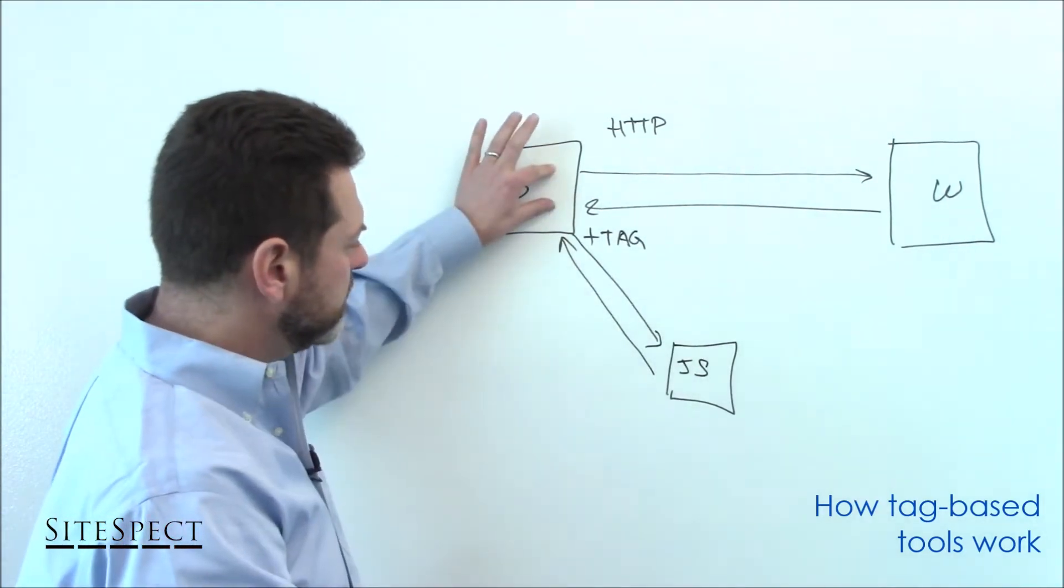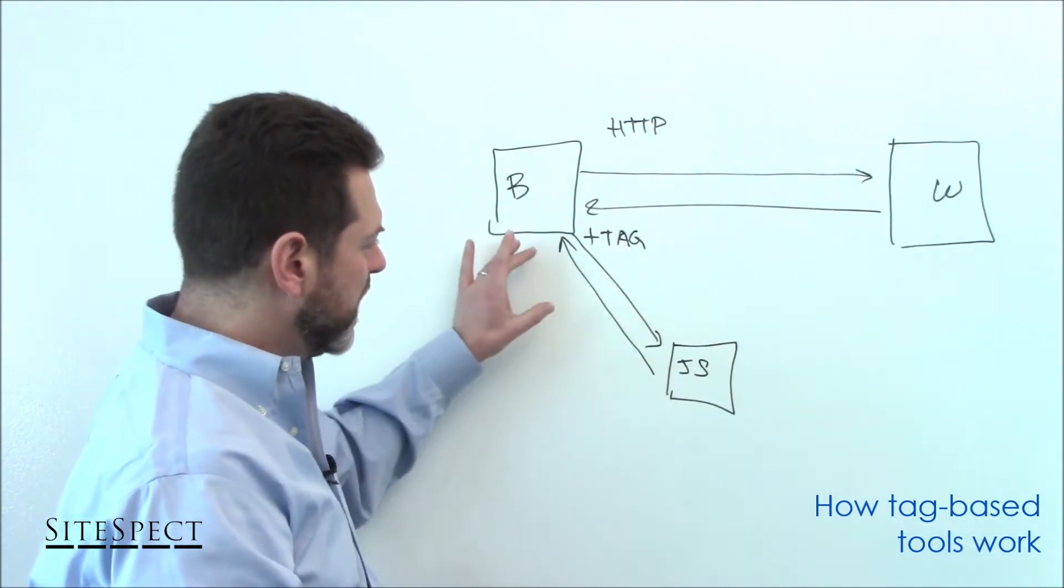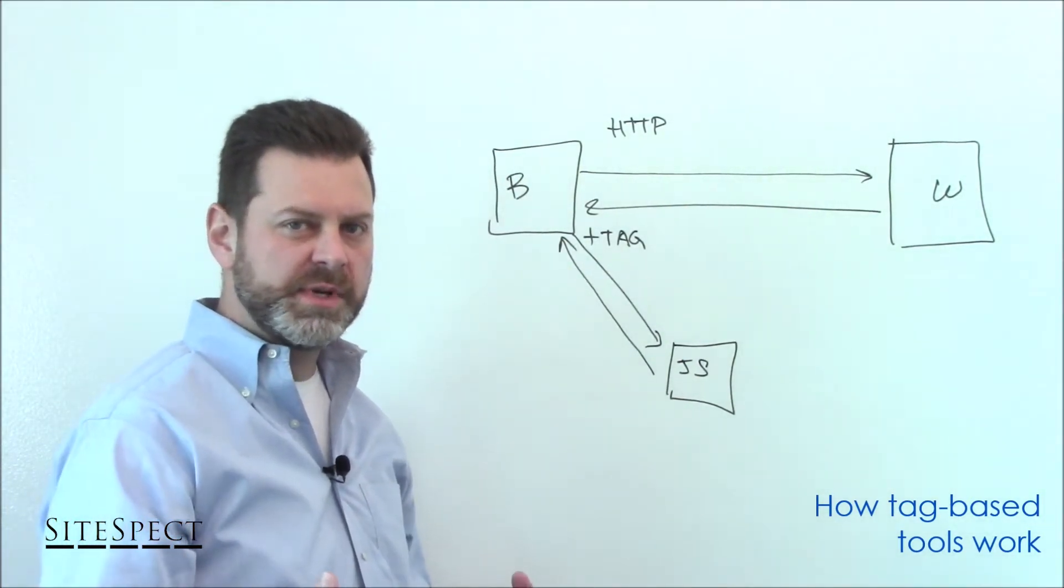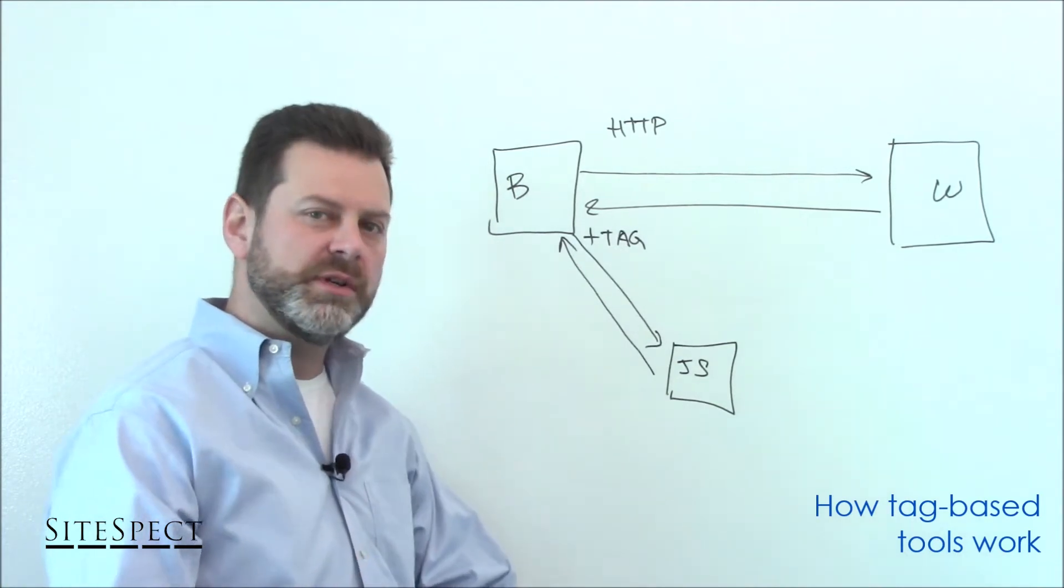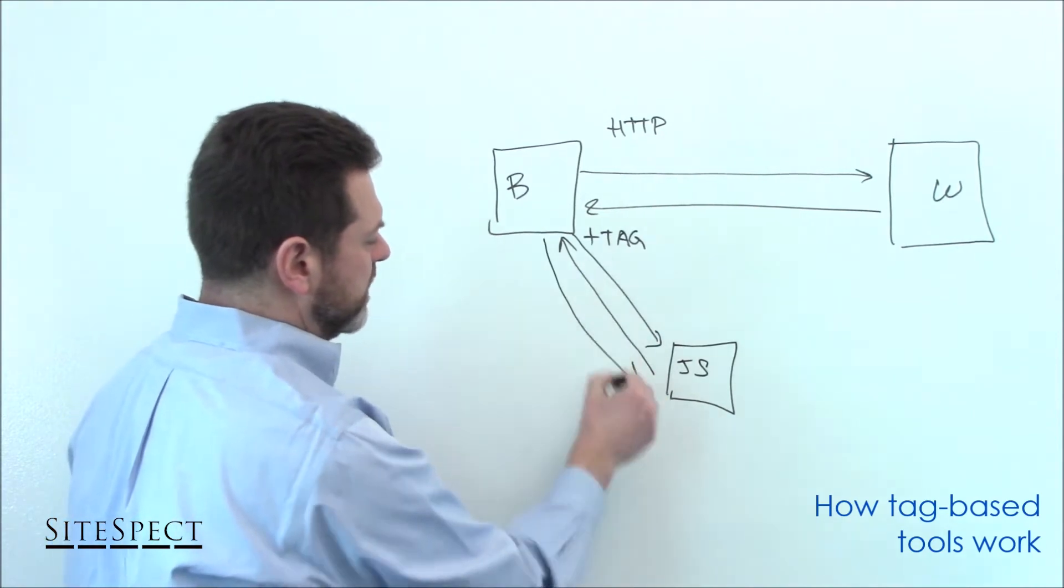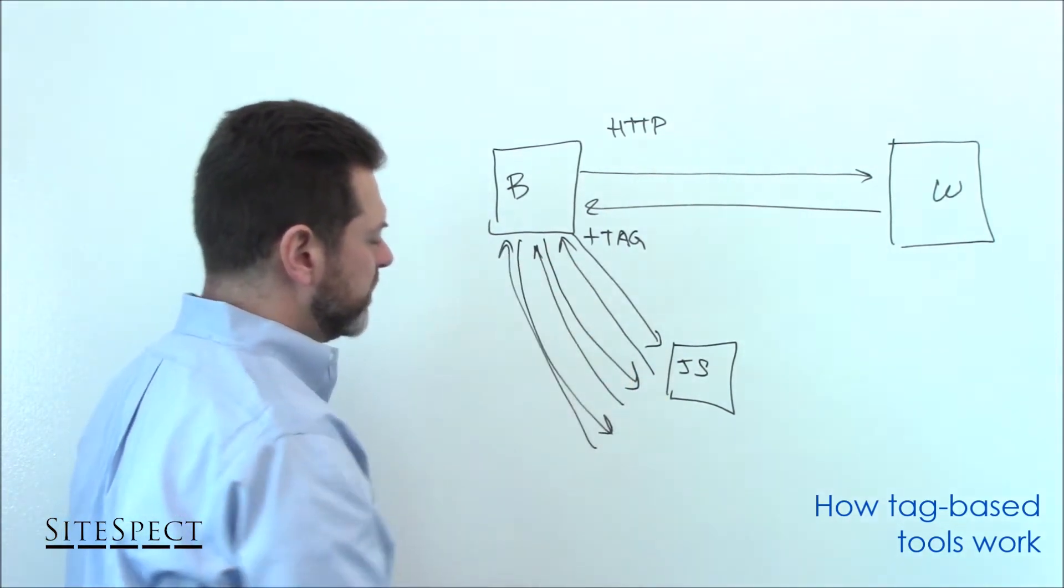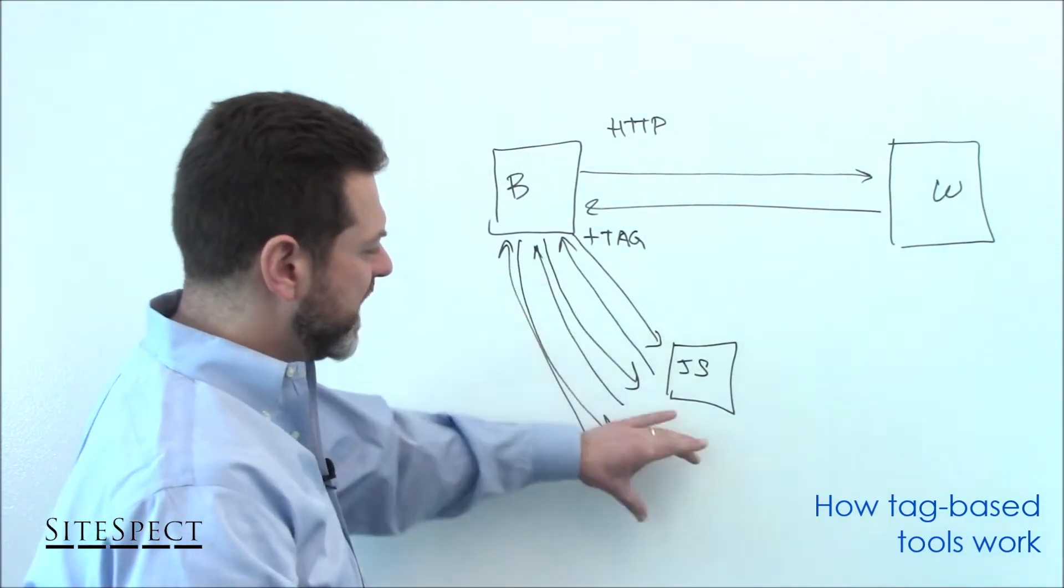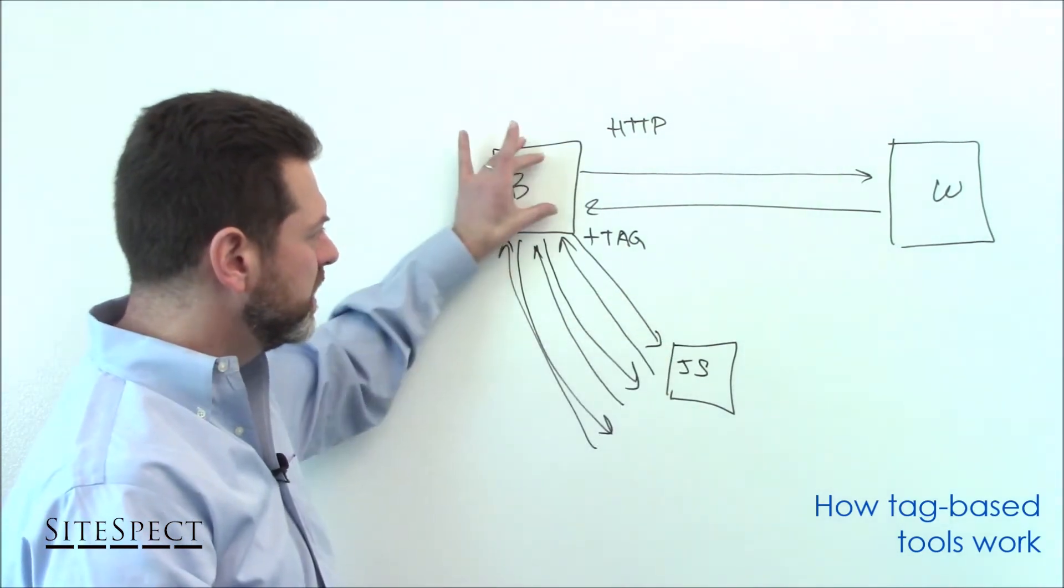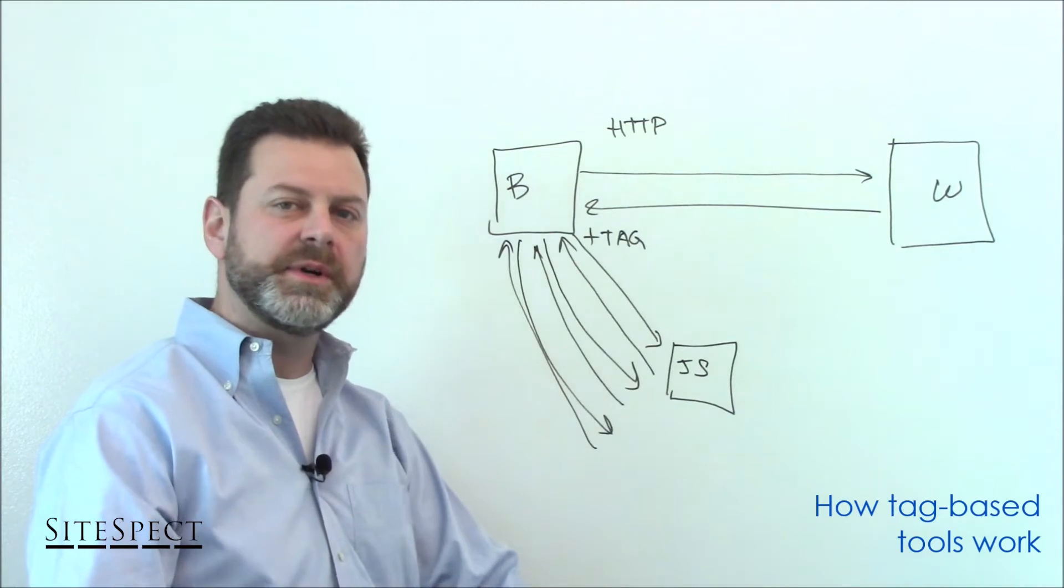This tag is served back to the browser in response. And now the browser has the tag, which is generally static. But in order to figure out what kind of experiments and personalization campaigns need to be loaded and executed for that particular page view for that user, there's actually subsequent calls that the tag itself will make back to the tag server. So there's a whole sort of side band of communication that needs to happen for all this to piece together. And once this is done, the browser can finally complete rendering of the page and present the experience to the end user.